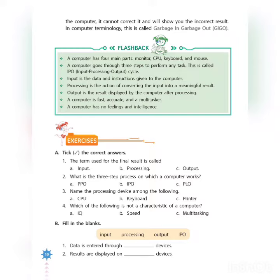Number 1. A computer has 4 main parts: Monitor, CPU, keyboard and mouse. Number 2. A computer goes through 3 steps to perform any task. This is called IPO, Input Processing Output cycle.